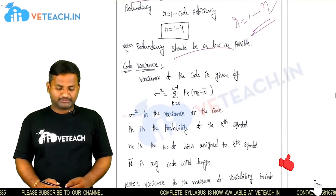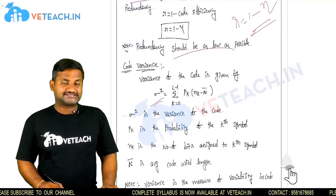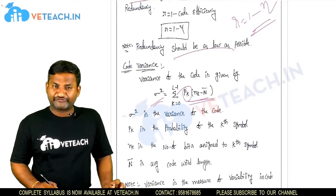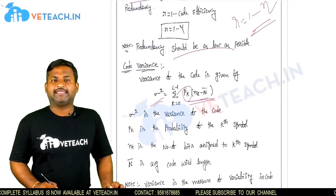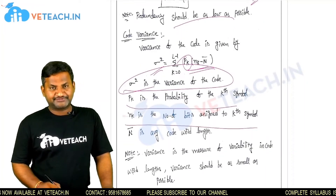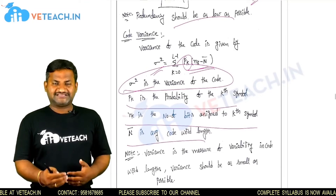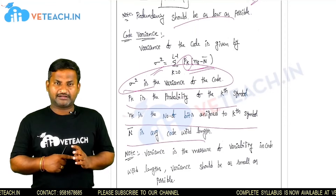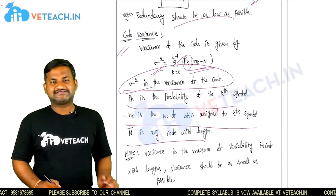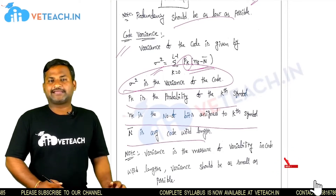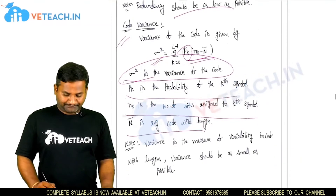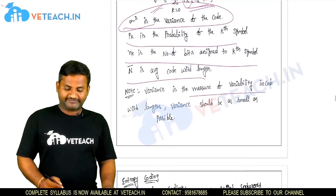Code variance: how can we calculate the code variance? The variance is represented as sigma-squared equals summation from k=0 to L-1 of pk times (nk minus n-bar) squared, where pk is the probability of the kth symbol, nk is the number of bits assigned to the kth symbol, and n-bar is the average code word length. Variance is a measure of variability in code word length and should always be small. From these basic concepts — n-bar greater than or equal to H (Shannon's theorem), code redundancy R equals 1 minus eta, and code variance — we can calculate redundancy, code efficiency, code word length, and information rate.